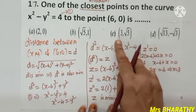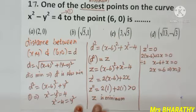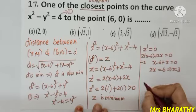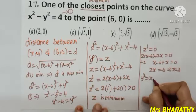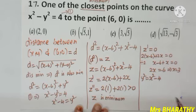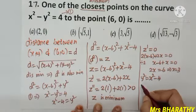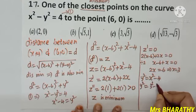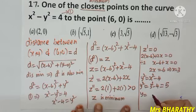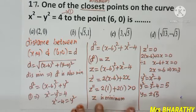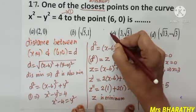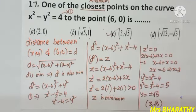With x = 3: y² = 3² − 4 = 9 − 4 = 5, so y = ±√5. The closest point is (3, √5). Option C is the right choice.